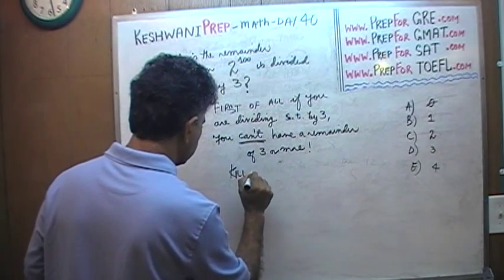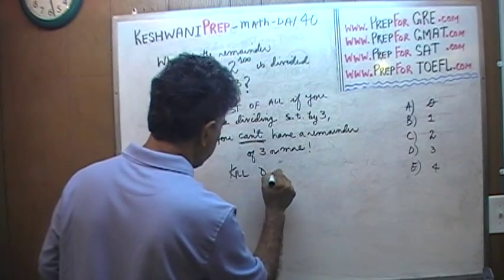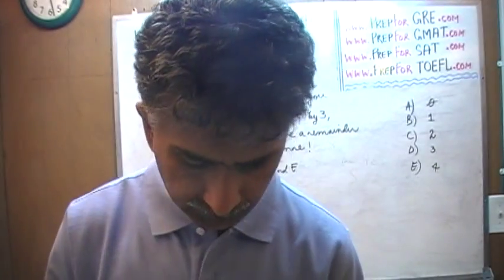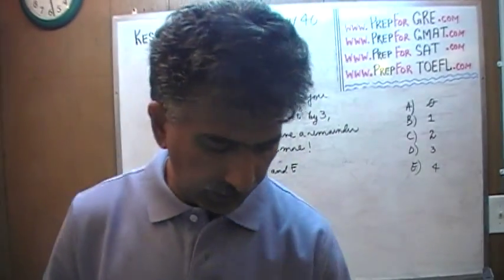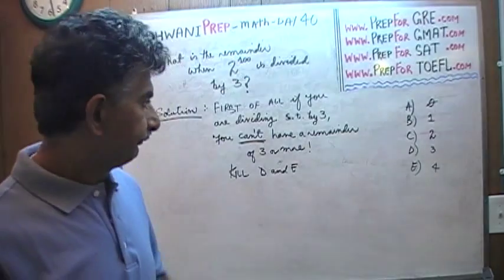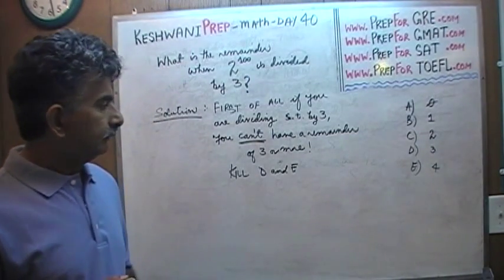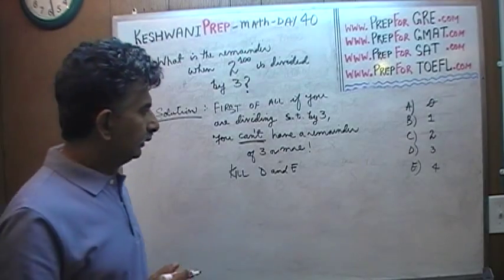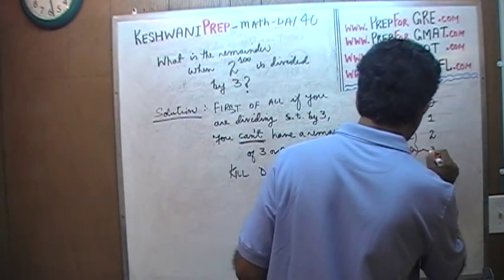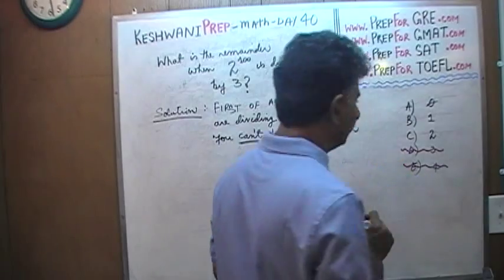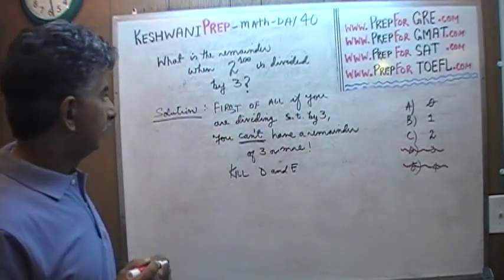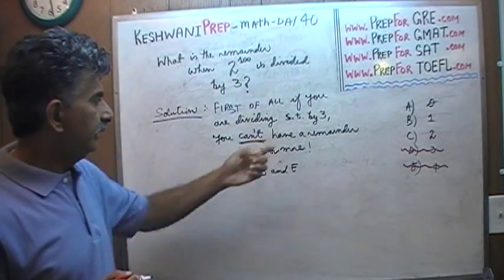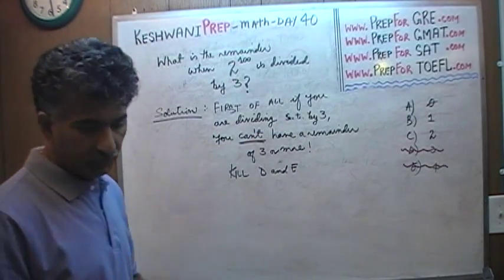Immediately, we should kill D and E. Answer choices D and E are nonsensical. Why? They make no sense. If you divide anything by 3, you can't have a remainder of 3 or more.